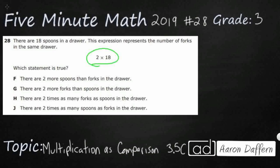So let's look at the problem. There are 18 spoons in a drawer. This expression represents the number of forks in the same drawer. So let's just draw a big drawer and I'm just going to put spoons and I'll put forks over here. Sometimes it's good just to go ahead and visualize it.